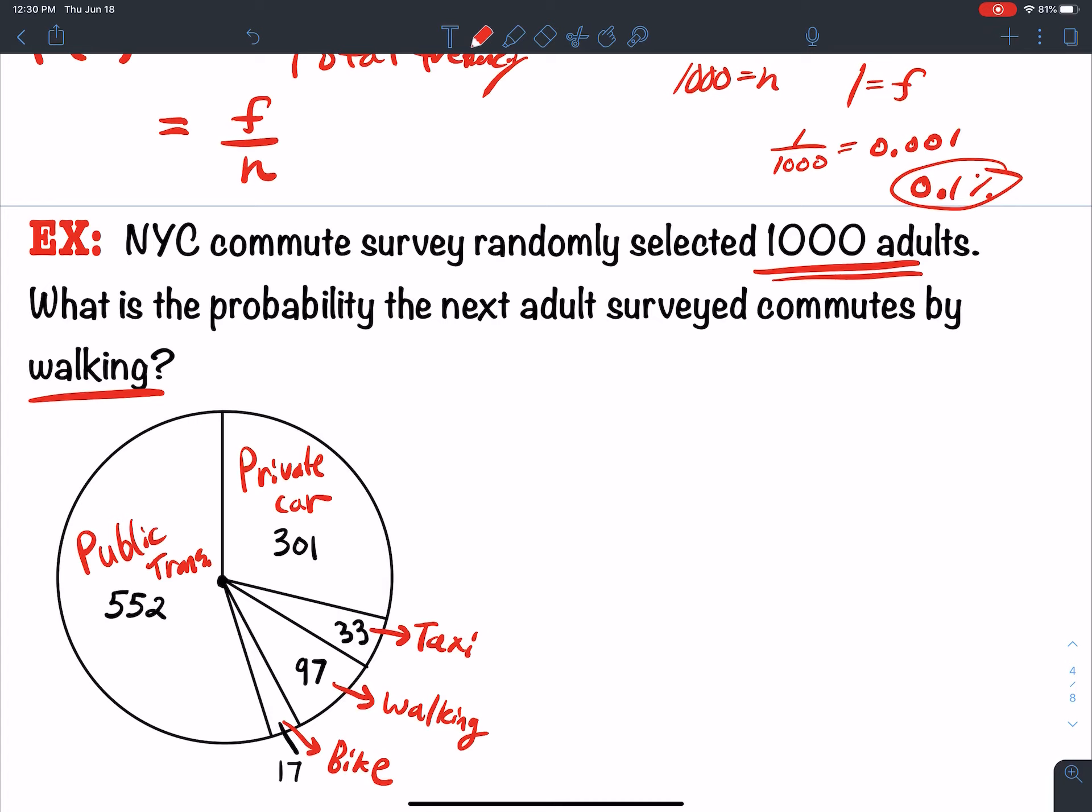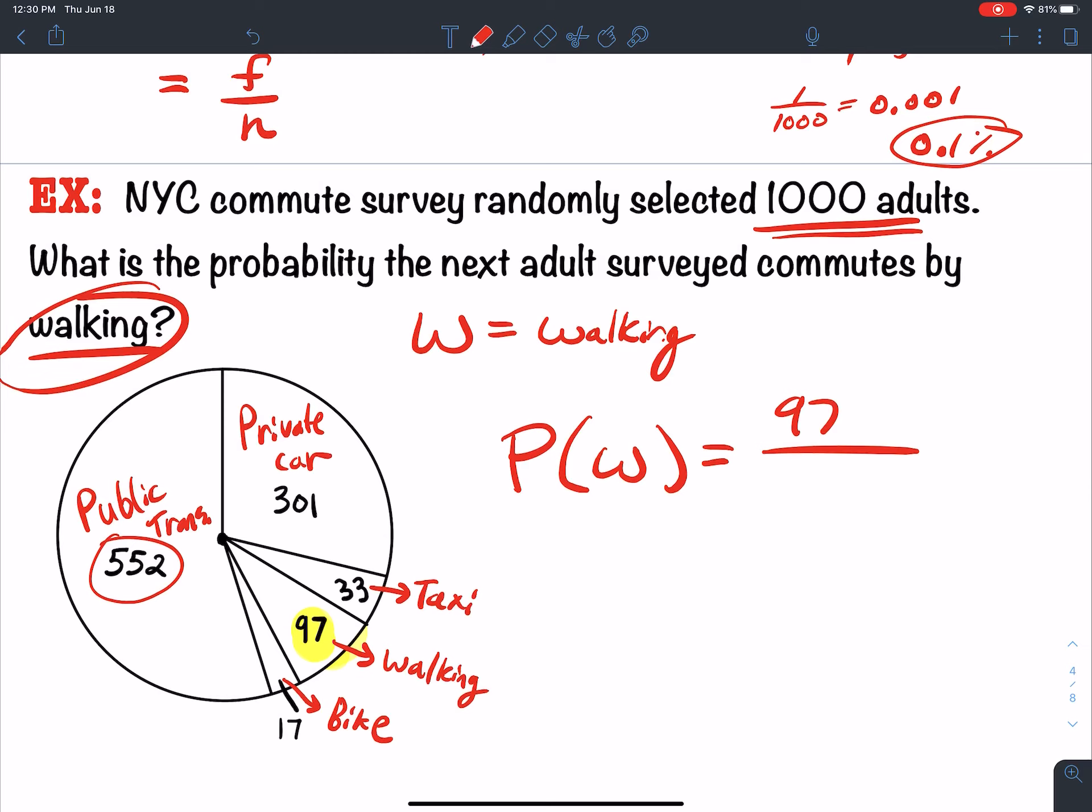So what's the probability that the next person surveyed commutes by walking? So let's call W walking. The probability that you commute by walking is equal to how many walkers there are. So we observe 97 out of how many total? Well, I take 552 plus 301 plus 33 plus 97 plus 17. And that should add up to 1,000. And so when you do this, you're going to get a decimal of 0.097.